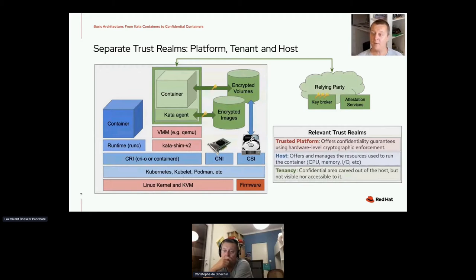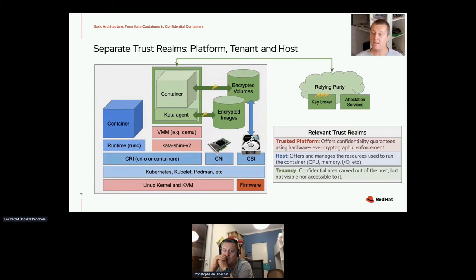Let me illustrate on this diagram where the trusted platform is drawn in red. It's a trusted execution environment that offers confidentiality guarantees using hardware-level cryptographic enforcement. The host, drawn in blue, offers and manages the physical resources used to run the container — including CPU, disk, memory, networking, and so on. The tenant security realm, drawn in green, includes a confidential area carved out of the host called the trusted enclave, protected by cryptography so that the host cannot see or access the data in it. This also includes things that may run outside of the host, such as key brokering services, attestation services, and container image download.